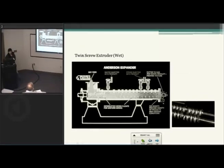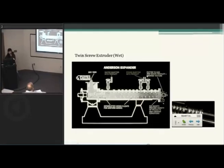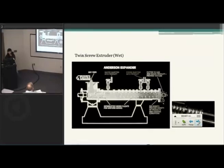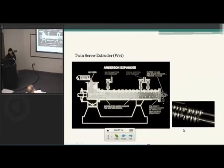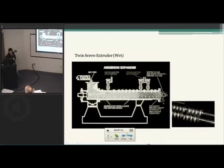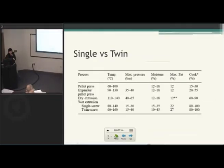For the twin-screw extruder, there's a valve where you can inject water into the system, and this is where you heat up the system. The screw carries the material along and heats it up. You can see that this extruder has two screws rotating in opposite directions, so it's more powerful. You don't have to worry about the type of material you're putting in because it's more powerful — even though it is very viscous and very fatty, because of the high power torque, it's going to move it through.